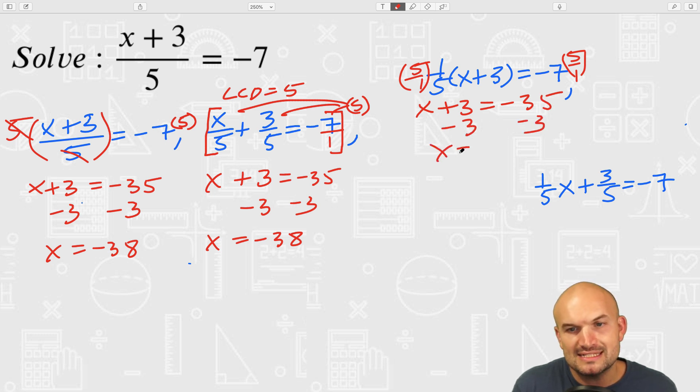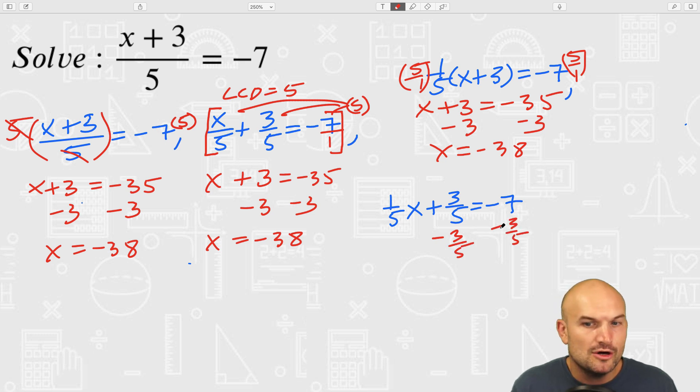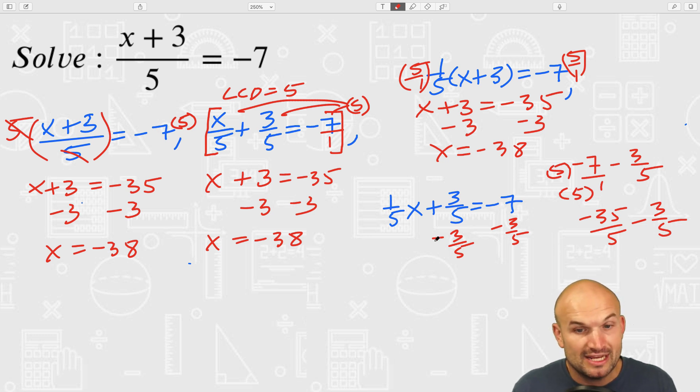All right, so the last example is going to include some fractions. I know this is probably the one that most people probably want to avoid the most, but you can see that by using these inverse operations, everything is going to connect. So we could just isolate the x by subtracting three-fifths on both sides. Now I know most people do not want to subtract negative 7 minus three-fifths, but in reality all you have to do is just get a common denominator. So that's going to be negative 35 over 5 minus three-fifths, which equals negative 38 fifths.